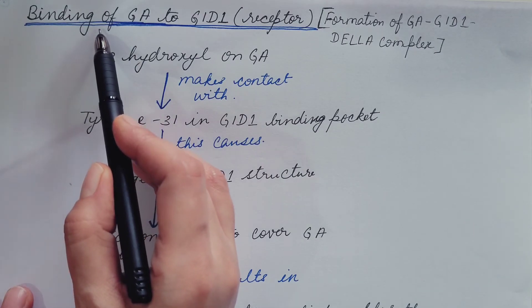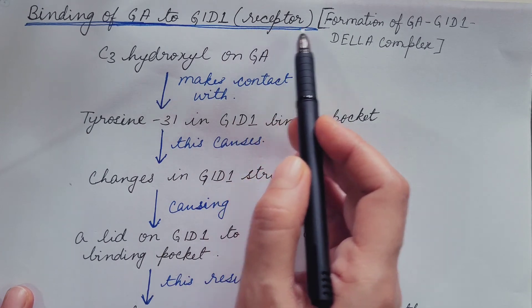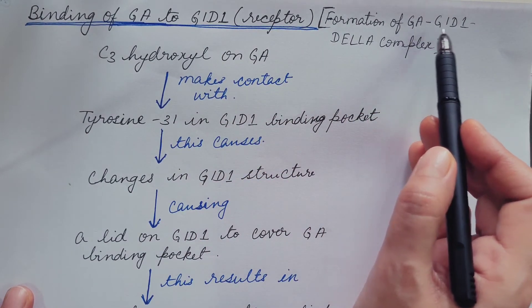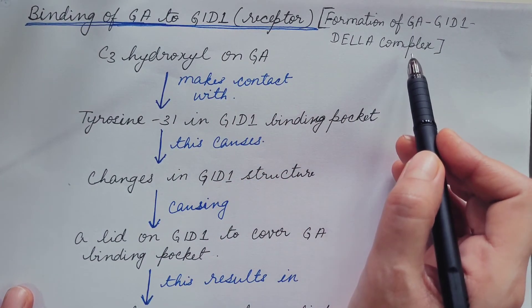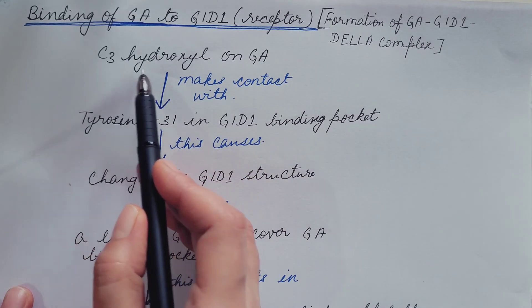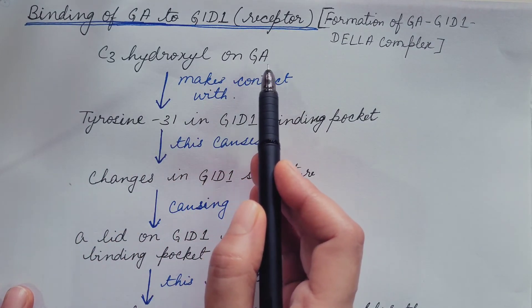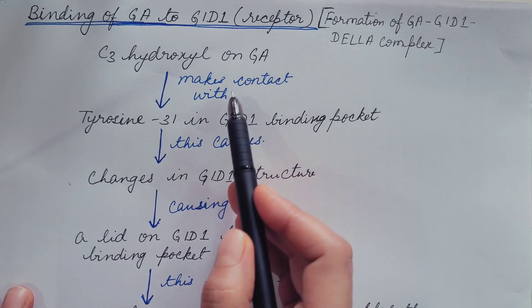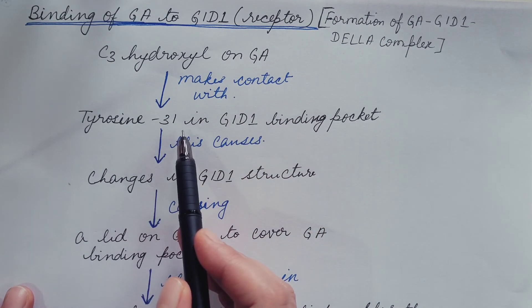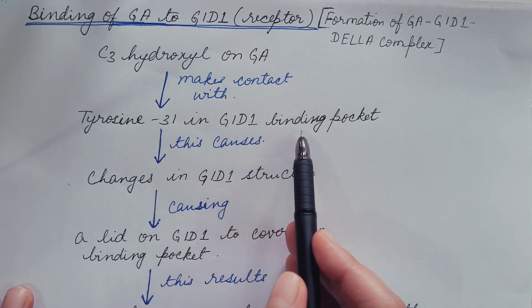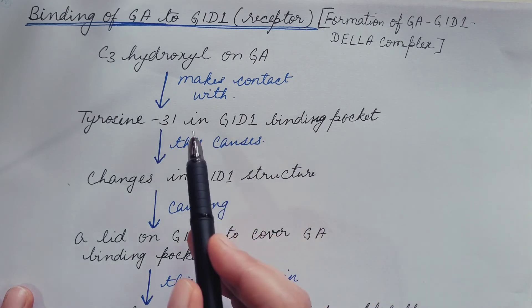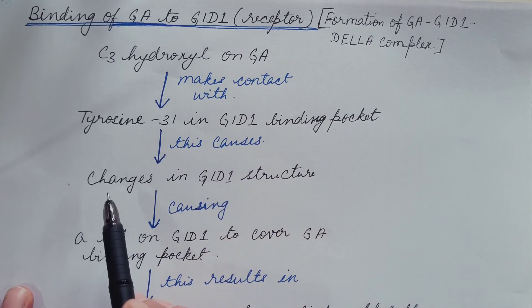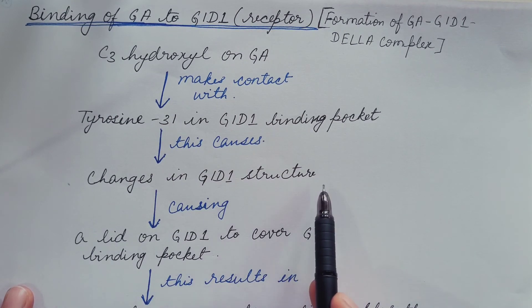Now let us understand binding of gibberellin to receptor and how gibberellin-GID1-DELLA complex is formed. C3 hydroxyl on gibberellin makes contact with tyrosine 31 in GID1 binding pocket and this causes changes in GID1 structure.